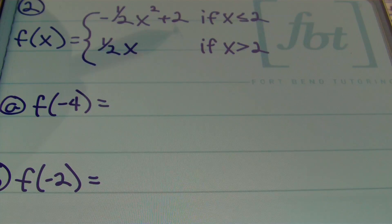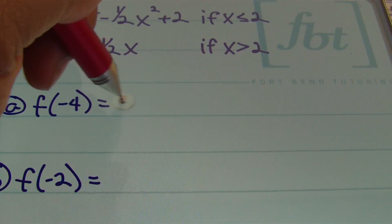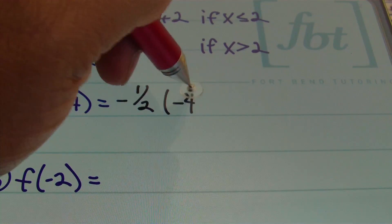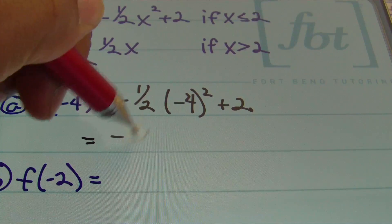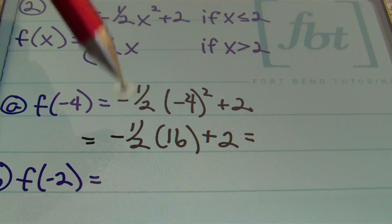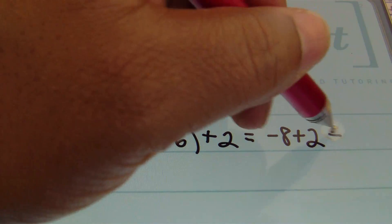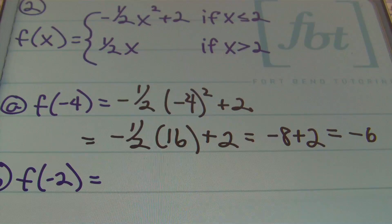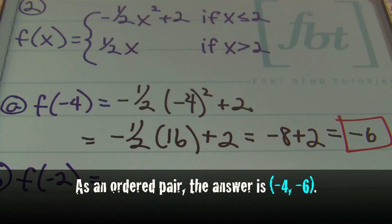Negative four is less than or equal to two, so we plug into negative one half x squared plus two. That gives negative one half times negative four squared plus two. Negative four squared is 16, and negative one half times 16 is negative eight. Negative eight plus two equals negative six.